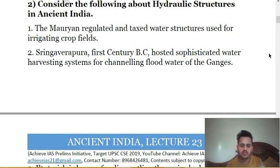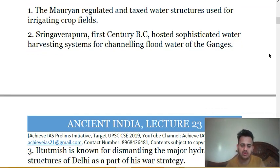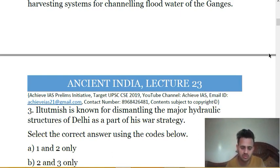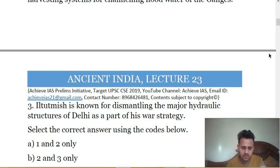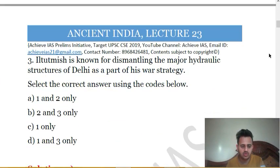The first statement is correct — Mauryans regulated water structures, built lakes, and taxed water structures used for irrigation of crop fields. The second statement is also correct — Shringaverapura, 1st century BC, near Allahabad, hosted a sophisticated water harvesting system for channeling flood water of the Ganges. The third statement is wrong — Iltutmish is known for building Hauz-i-Khas for channeling water to Delhi, not for dismantling any major hydraulic structure. So only 1 and 2 are correct. The answer is A.